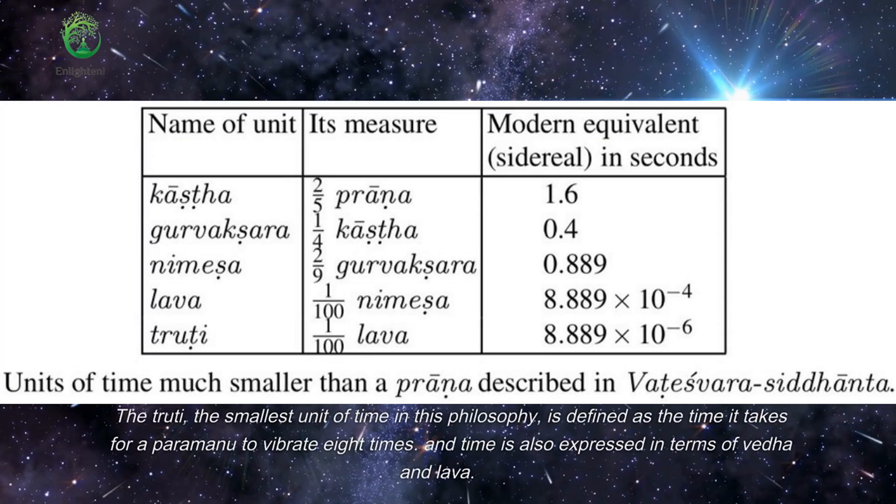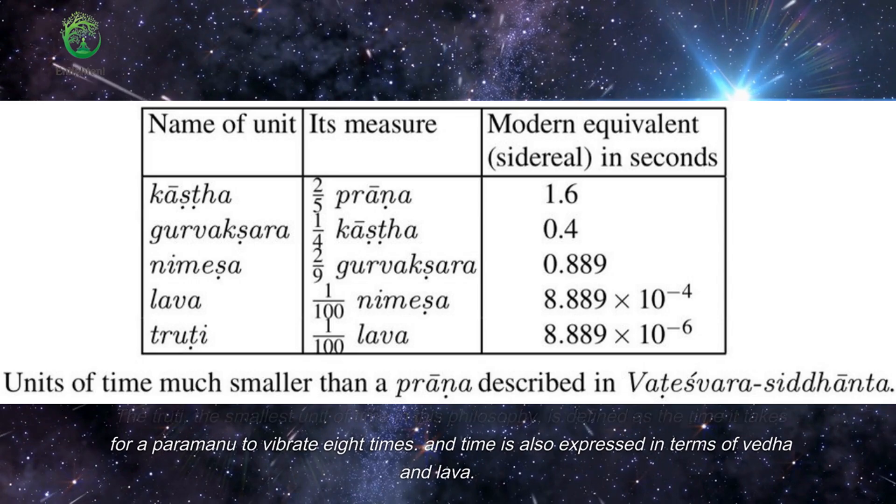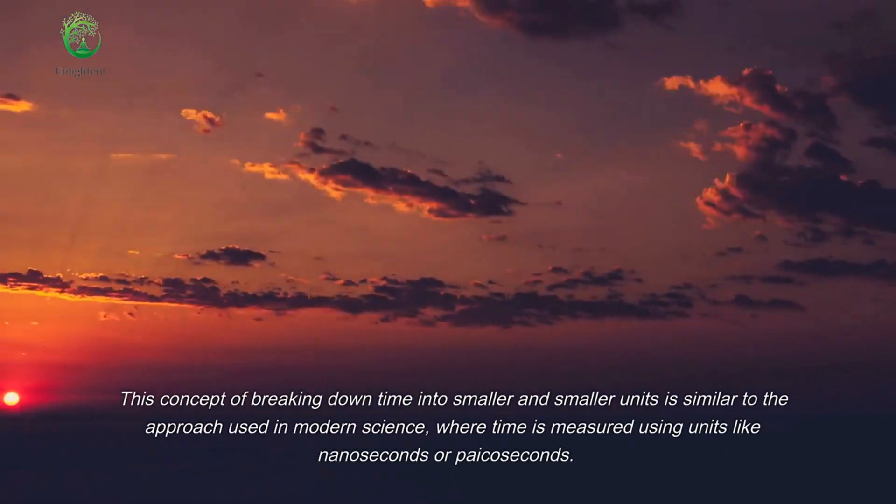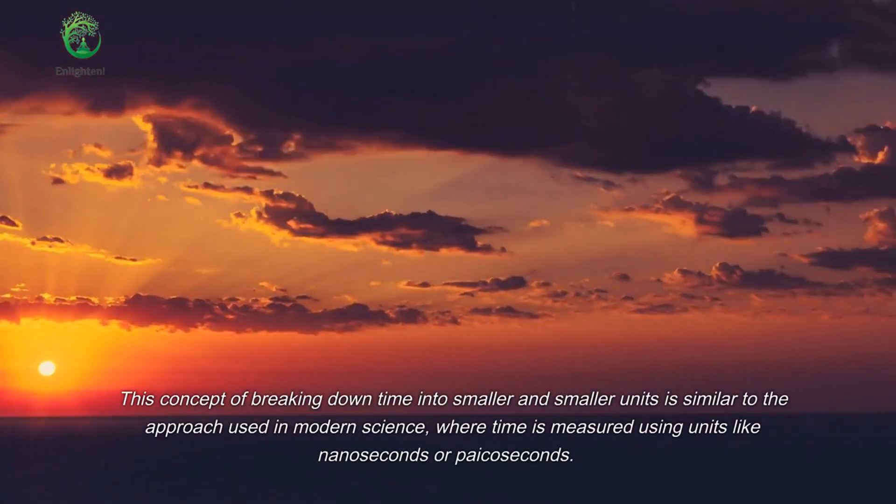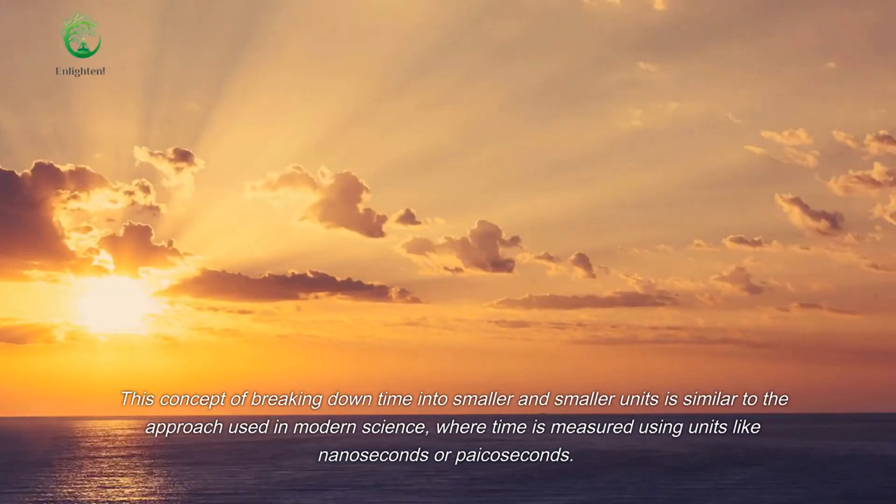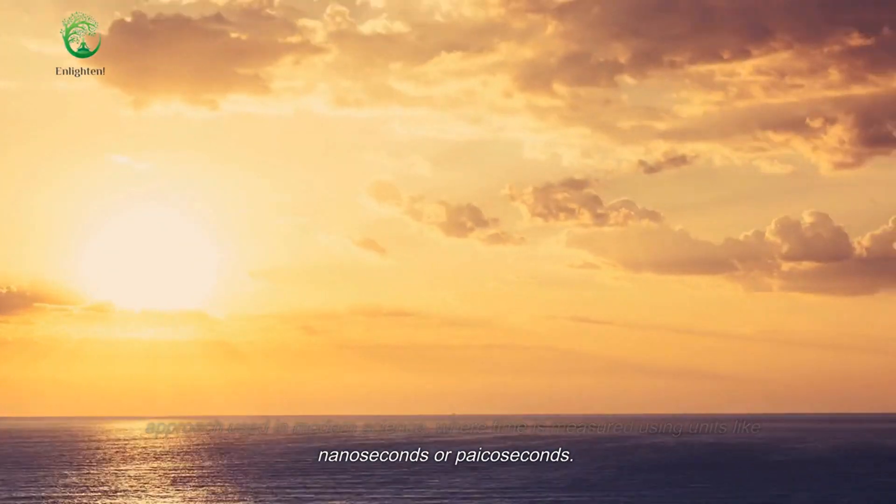The truti, the smallest unit of time in this philosophy, is defined as the time it takes for a paramanu to vibrate eight times. And time is also expressed in terms of veda and lava. This concept of breaking down time into smaller and smaller units is similar to the approach used in modern science, where time is measured using units like nanoseconds or picoseconds.